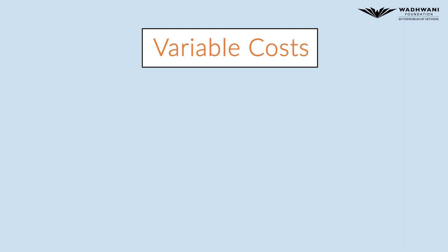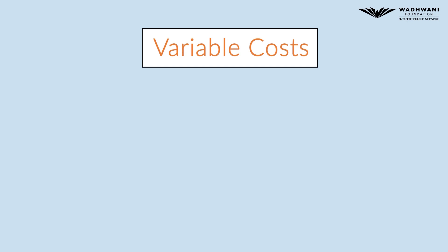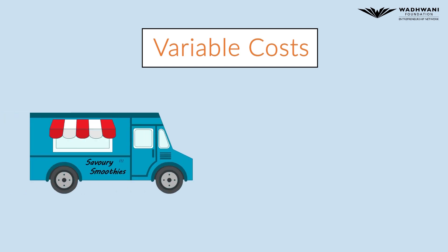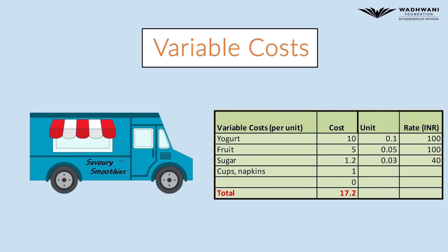Variable costs are costs that depend on the number of units produced and sold. In our example, the variable cost will be raw material consumed such as yogurt, sugar, cups and spoons.